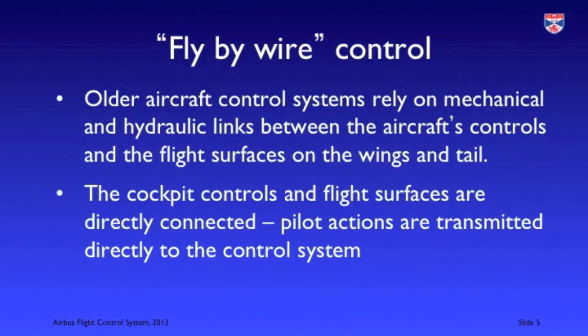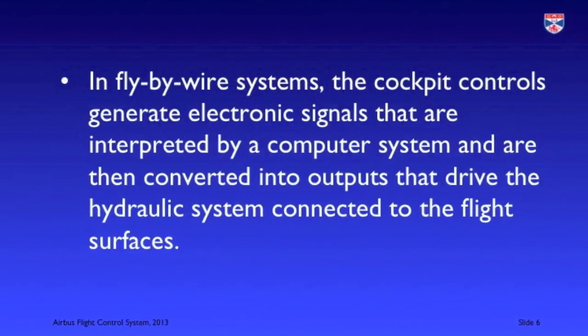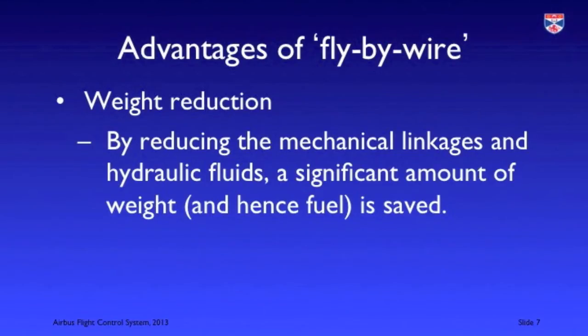In a fly-by-wire system there are no direct hydraulic connections between the cockpit and the flight surfaces. Rather, the manipulation of controls by the pilot causes electronic signals to be generated, interpreted by a computer, which then sends other signals to actuators associated with the flight surfaces and causes them to move. The advantage of this approach is that it lessens the weight of the aircraft, which improves its fuel efficiency, and it also allows computer mediation so that pilot actions which might place stresses on the airframe are controlled and sometimes stopped.